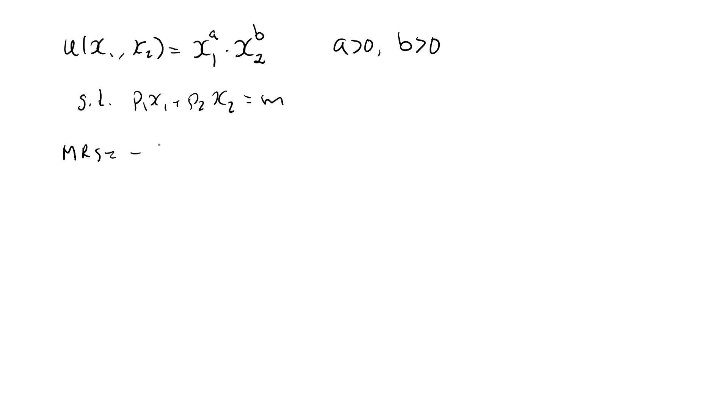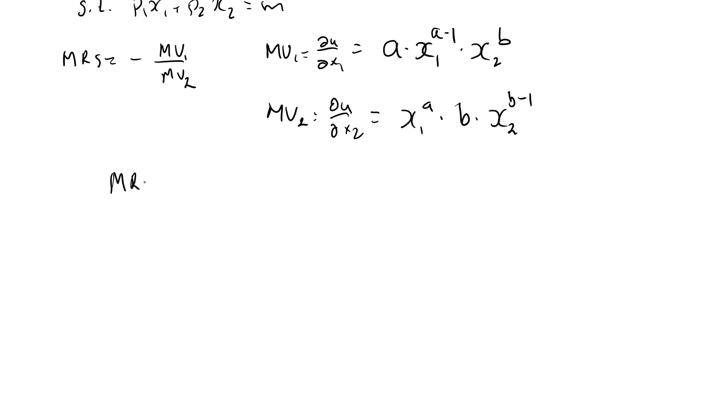MRS is minus mu1 over mu2. mu1 is the partial derivative of u with respect to x1. We have x1 to the a, so a goes in front, x1, and then we take it down one unit, x2 to the b. mu2, partial u, partial x2 is x1 to the a. Now the b goes in front, and we do x2 b minus 1. So we have MRS equal to minus ax1 to the a minus 1, x2 to the b, divided by bx1 to the a, x2 to the b minus 1.